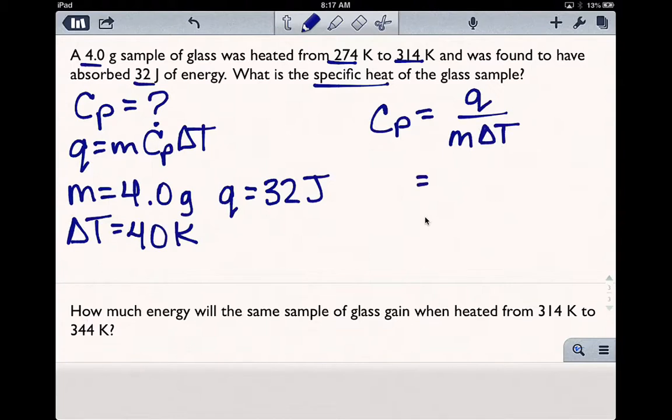And now we can plug our numbers in. So Q is 32 joules, and that is over the mass, which is 4, times the temperature change, which is 40. Okay, so in your calculator,